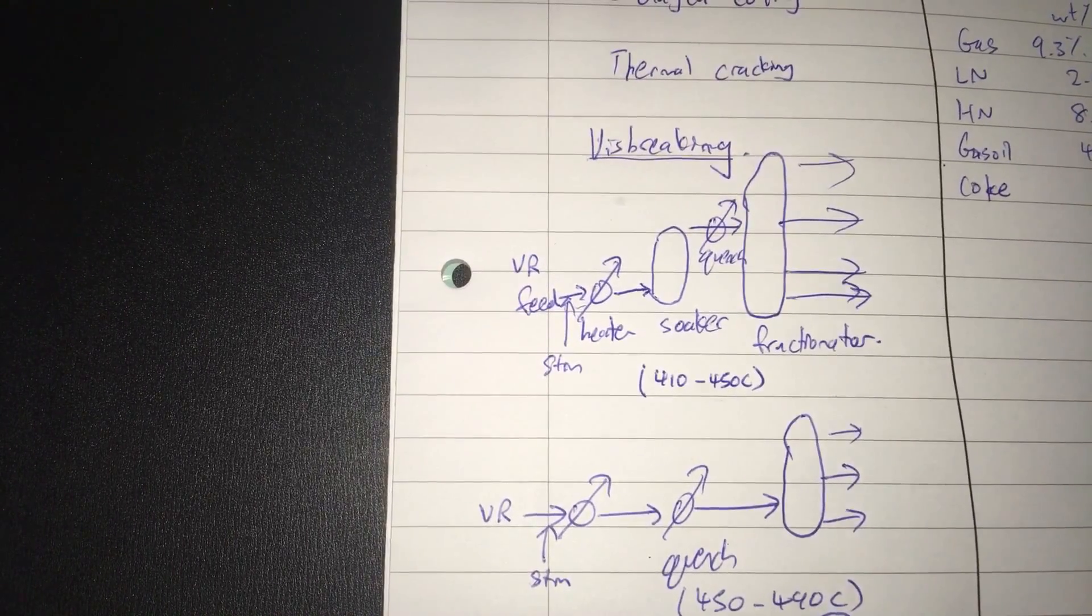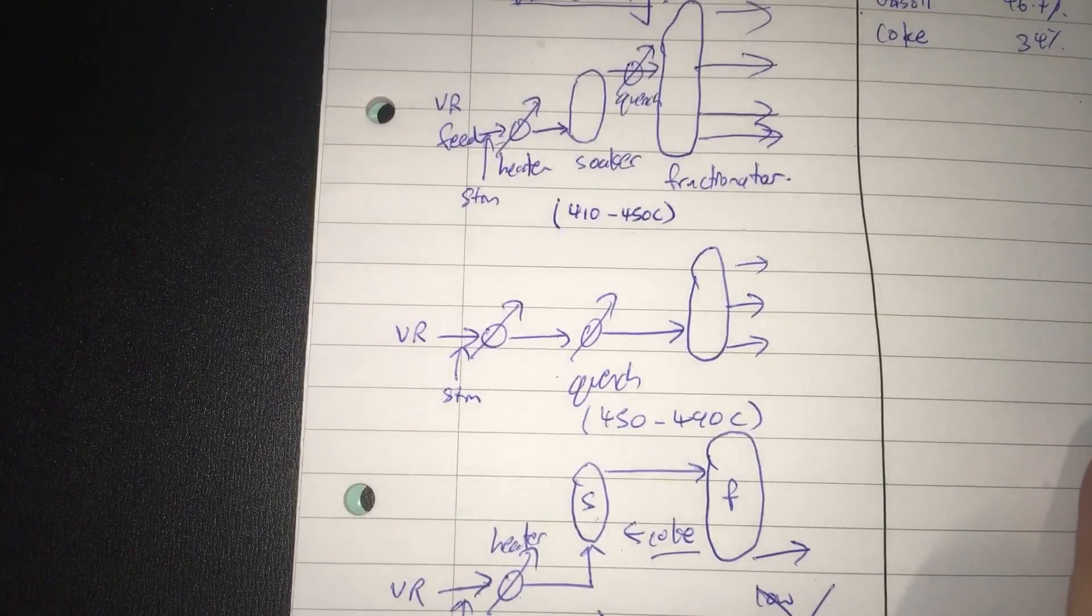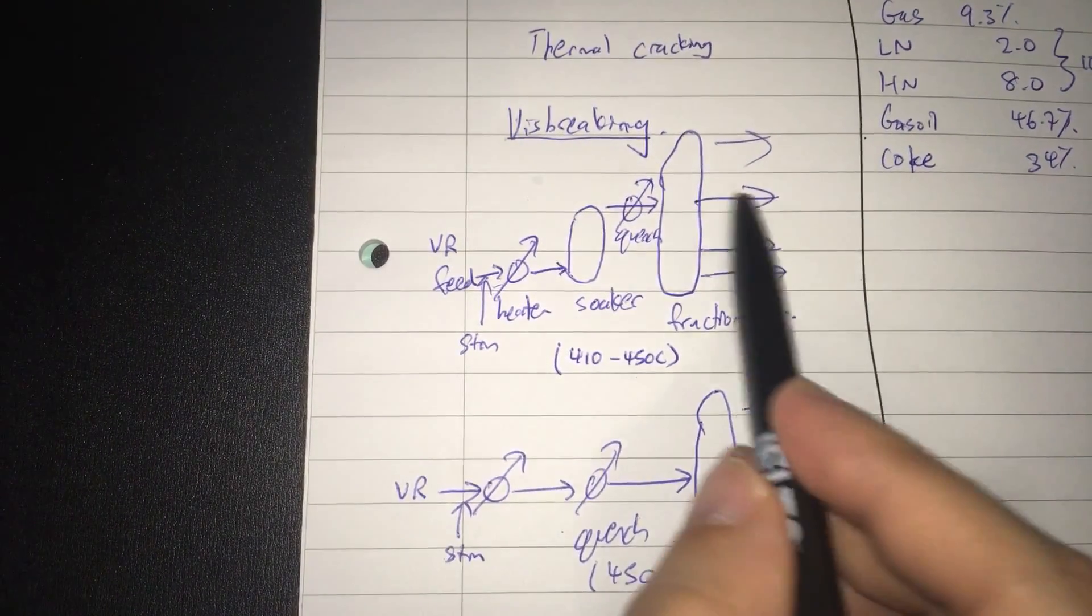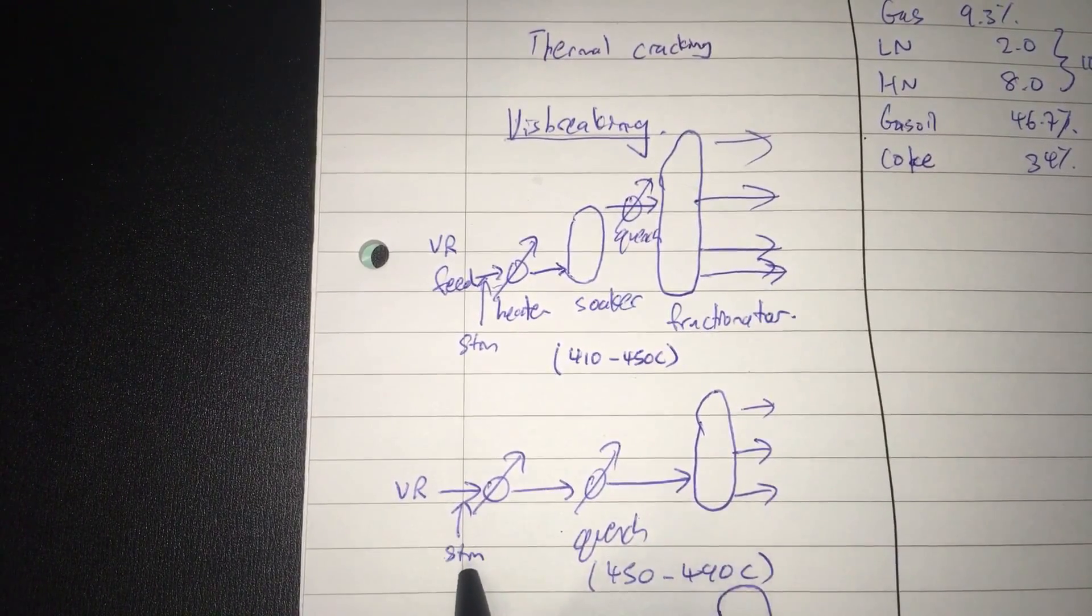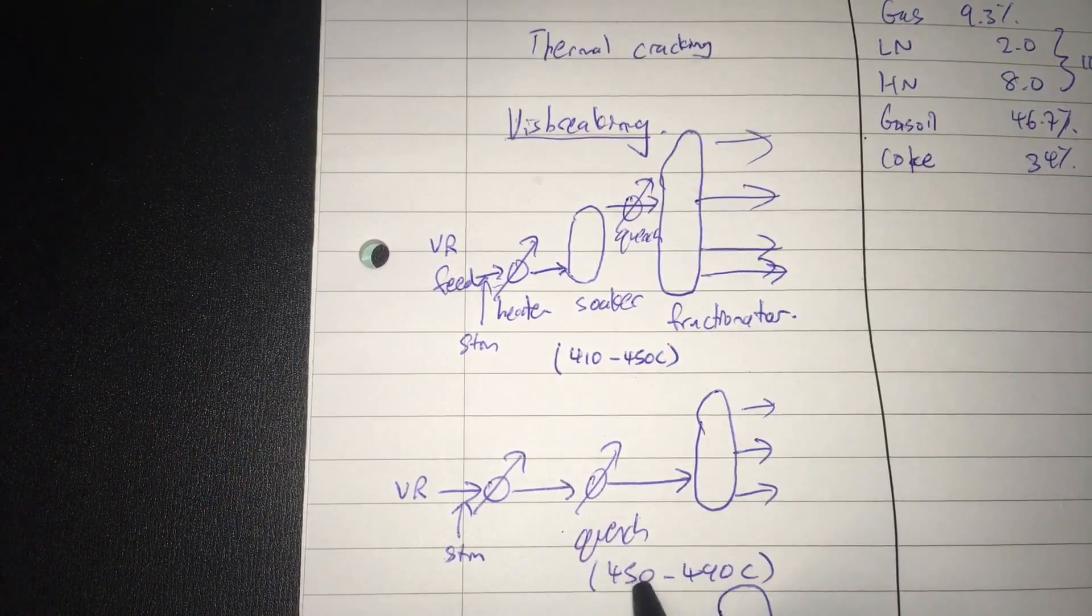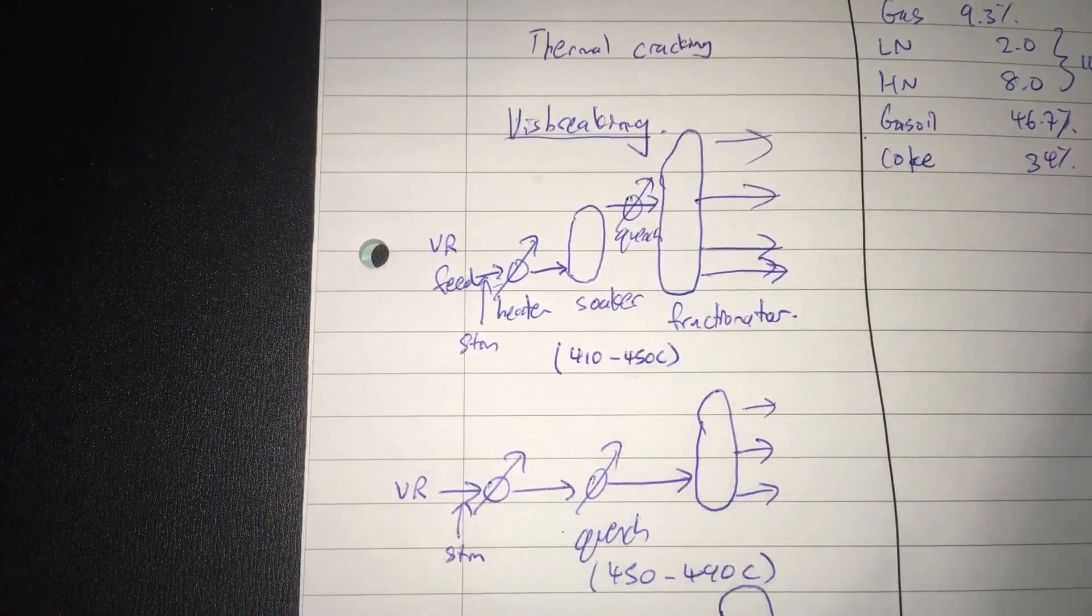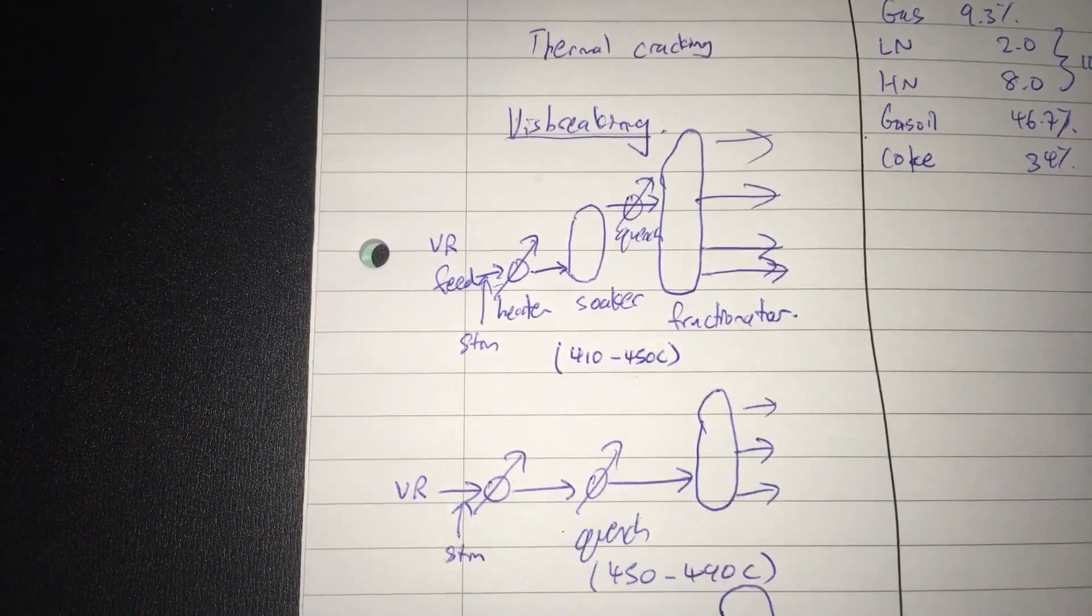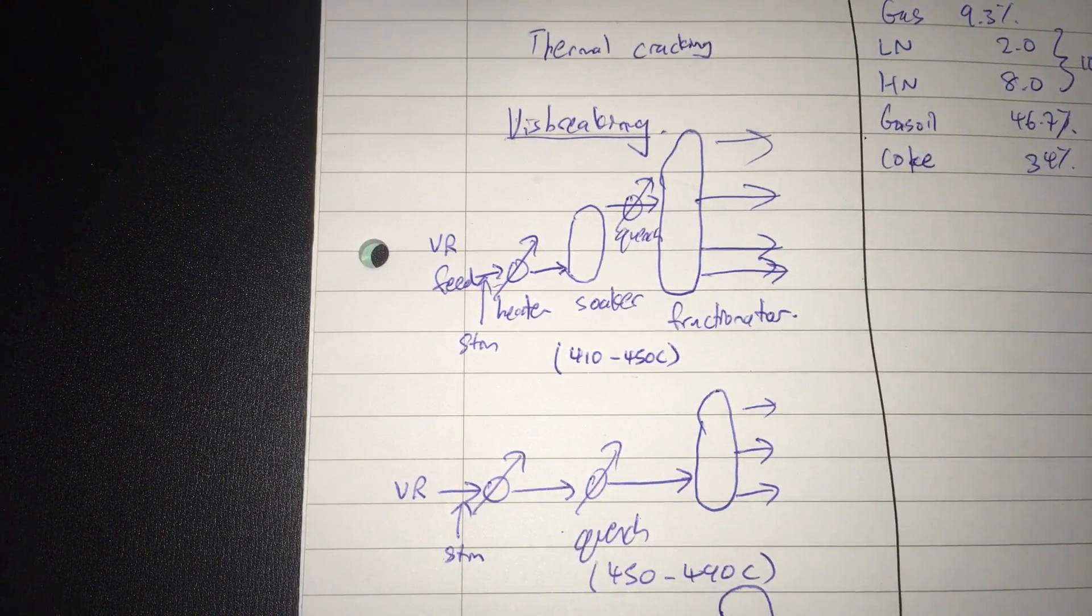Then the other way you do it is through a coil visbreaker, which is a much simpler mechanism. This is the coil visbreaker here. This is a soaker visbreaker. So in a coil visbreaker, you have a vacuum residue feed with some steam. You heat it up to a temperature of 450 to 490 degrees C. And you quickly quench it with some quench oil or something else. And then you fractionate it. The results are more or less the same. We have discussed the pros and cons of each of the visbreaking techniques before.